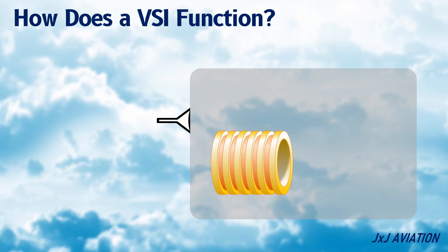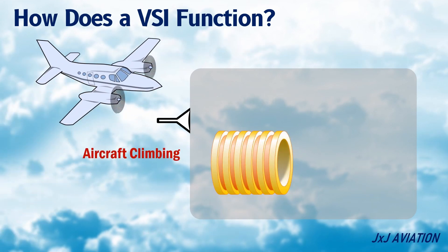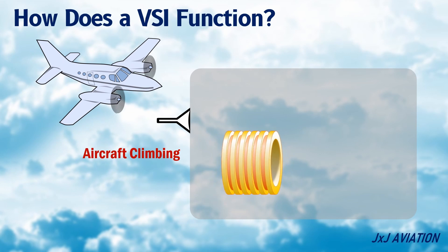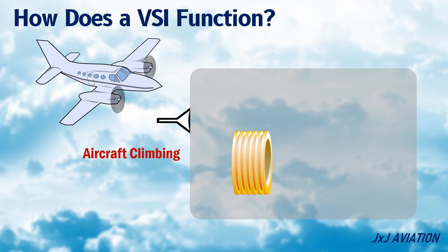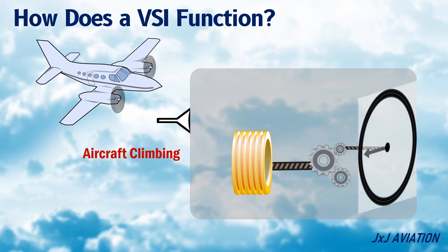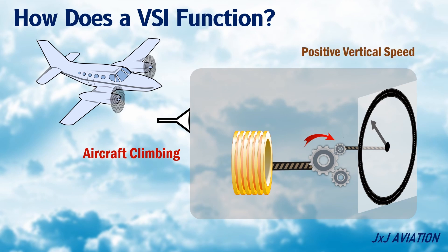When an aircraft climbs, the pressure reduces, which will cause the barometric capsule to compress. The capsule is connected to the instrument's needle through mechanical links, and the needle gets deflected up. This indicates the speed at which the aircraft is climbing.